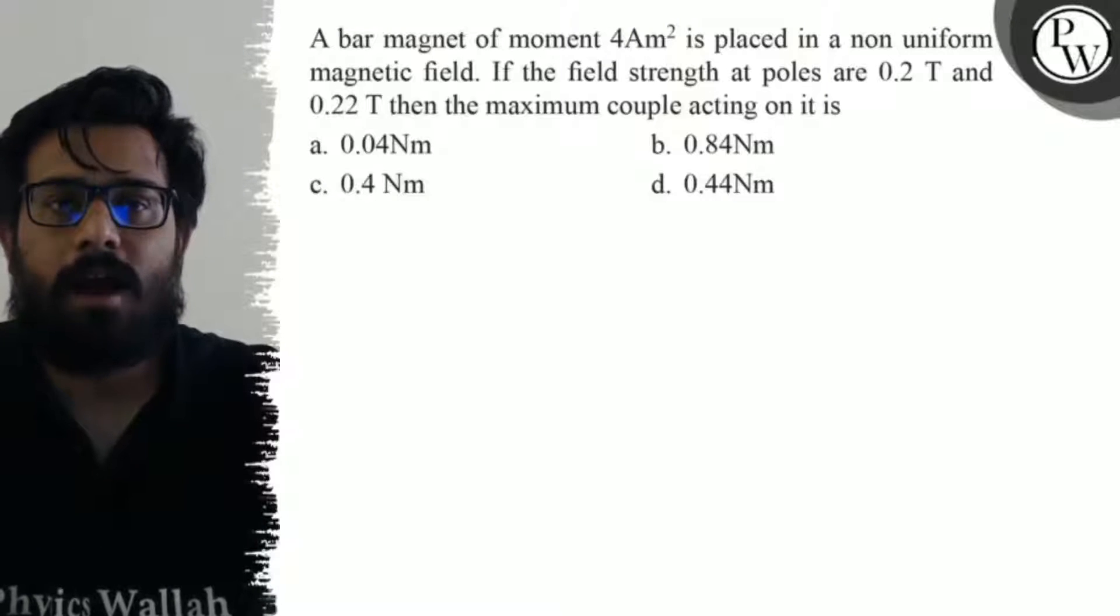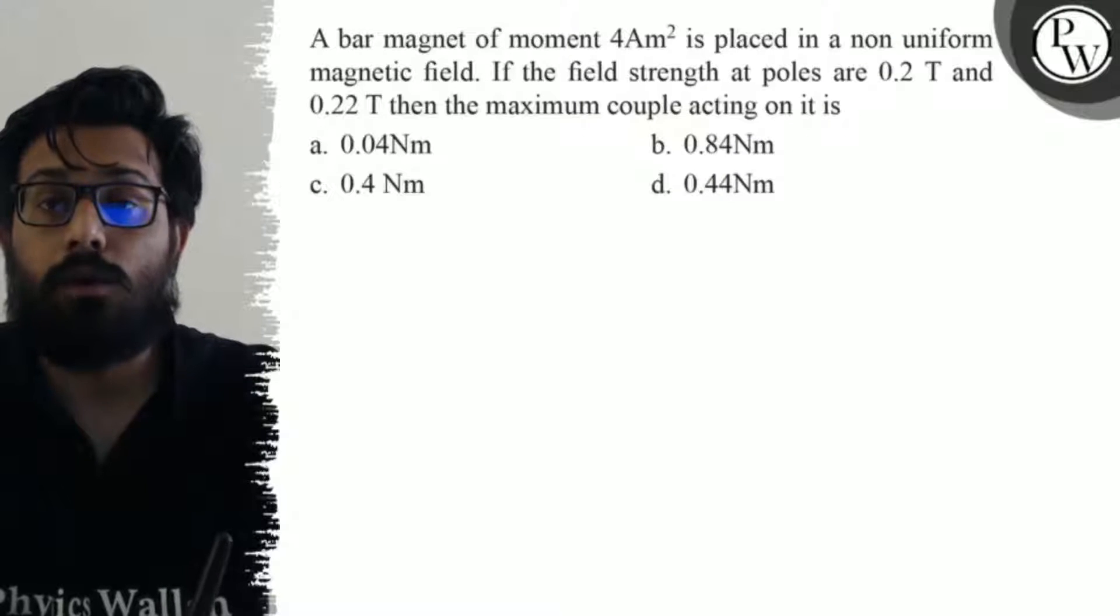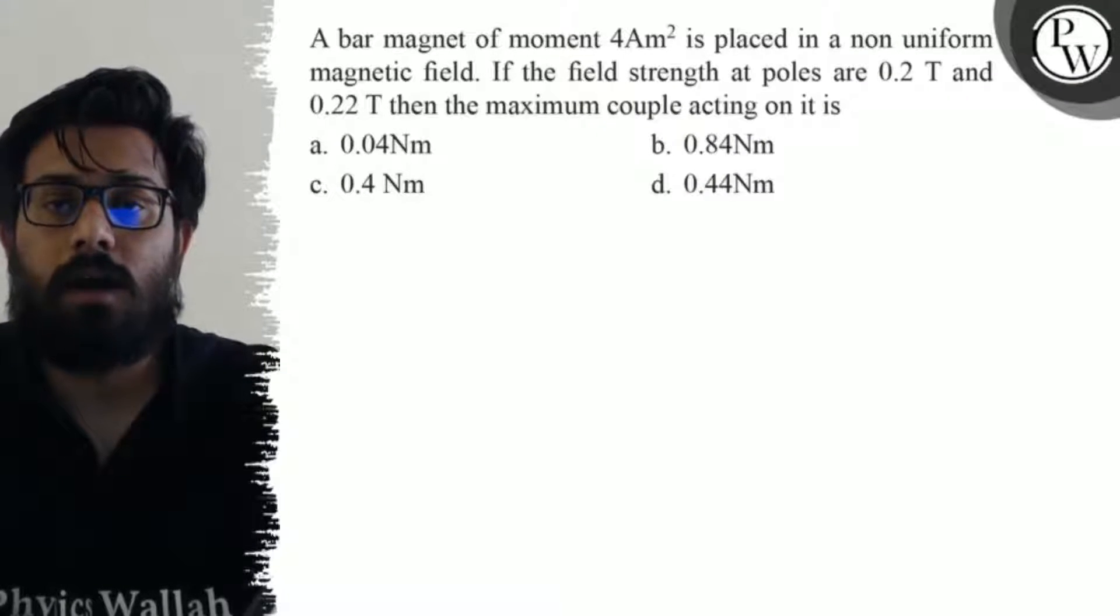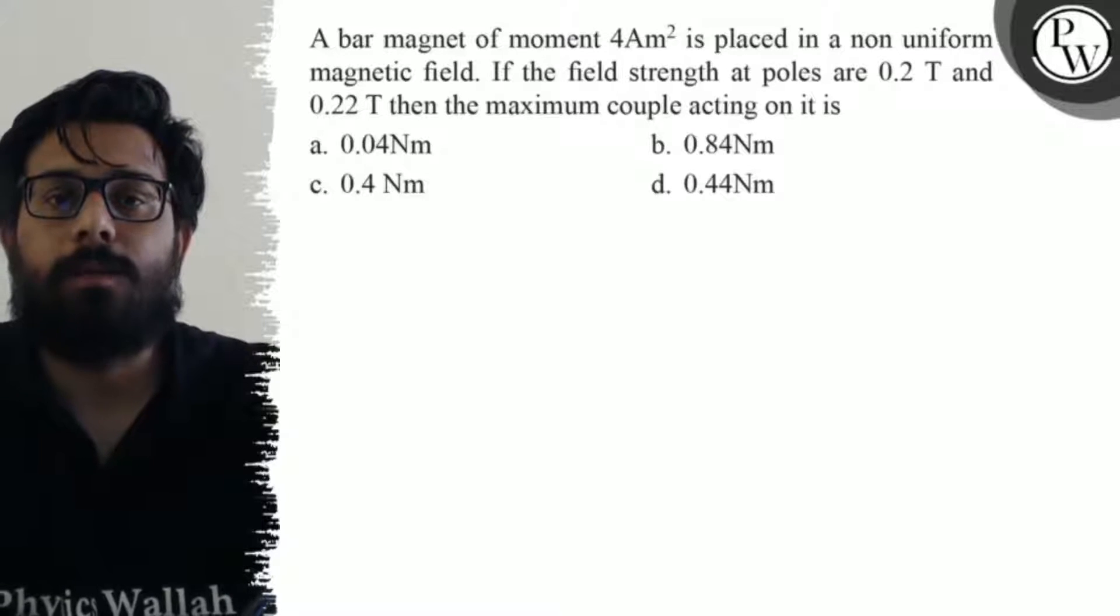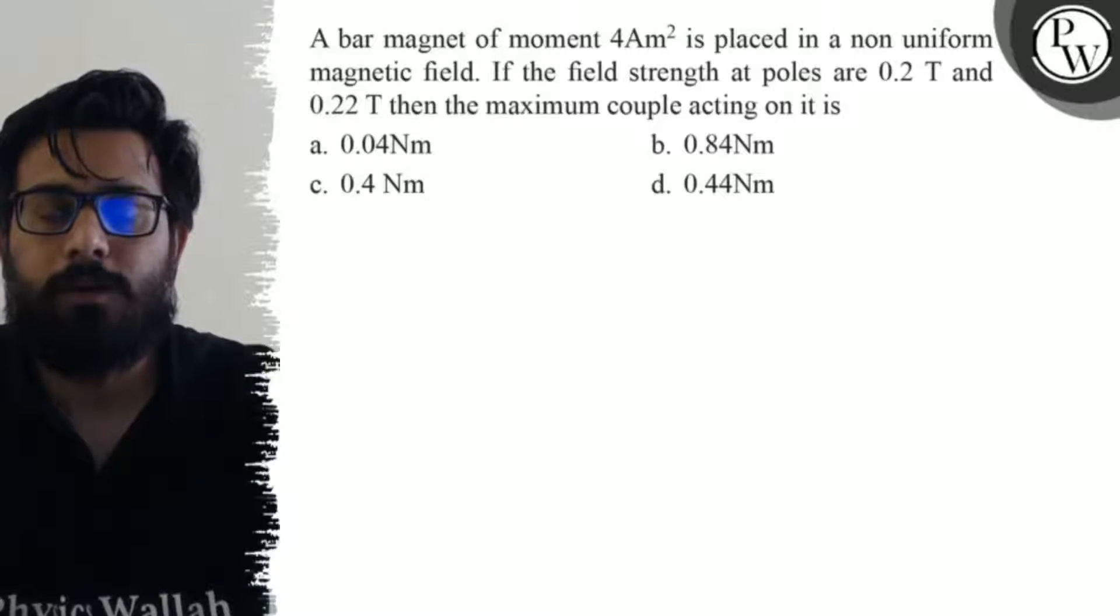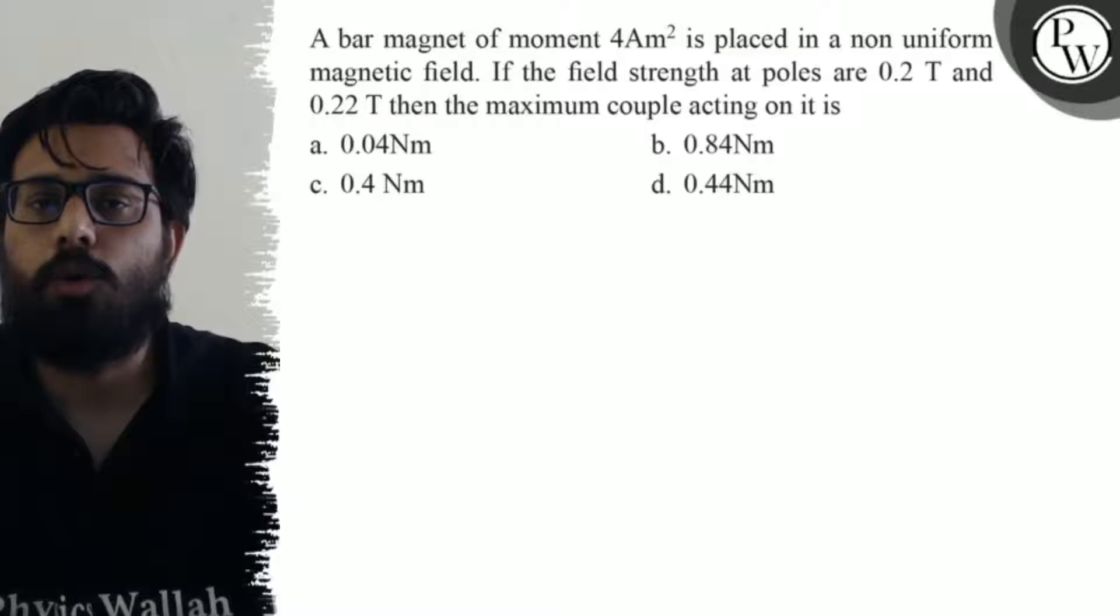Hello viewers, let's see the question. A bar magnet of moment 4 ampere meter squared is placed in a non-uniform magnetic field. If the field strength at poles are 0.2 Tesla and 0.22 Tesla, then the maximum couple acting on it is: (a) 0.04 Newton-meter, (b) 0.84 Newton-meter, (c) 0.4 Newton-meter, and (d) 0.44 Newton-meter.